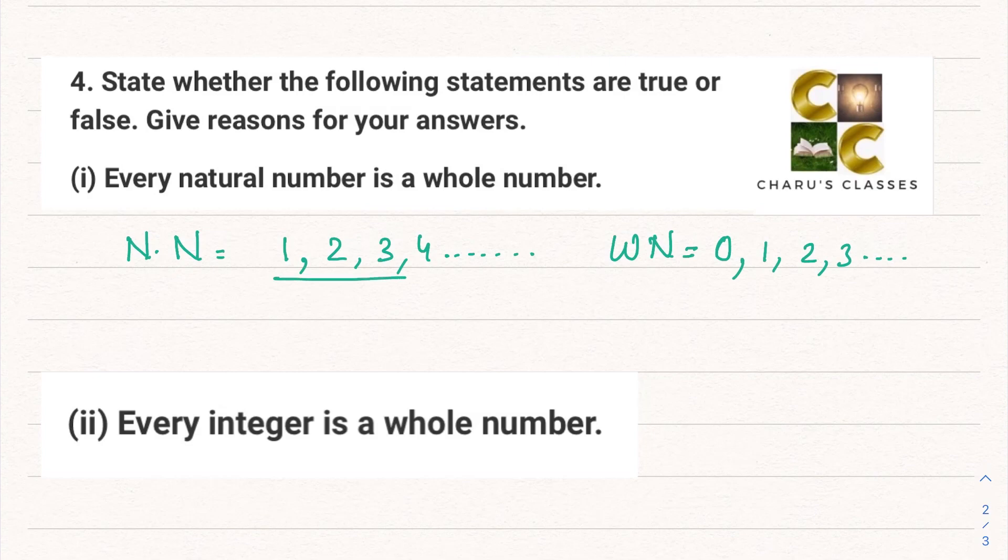So is every natural number a whole number? Yes, 1, 2, 3, 4 till infinity—all these numbers are part of the whole numbers. So this particular statement is a true statement.